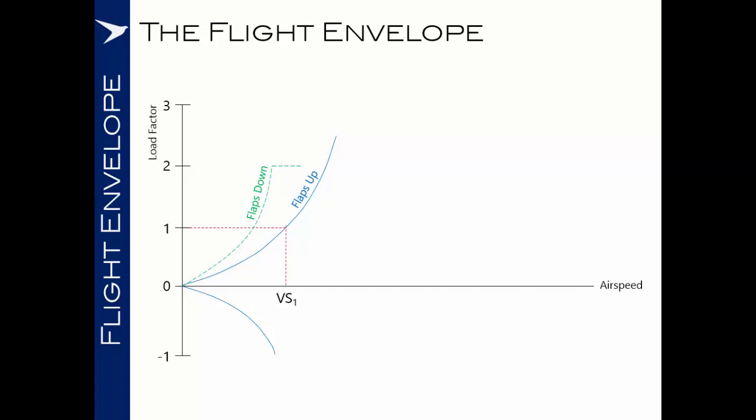With the aircraft in the clean configuration back to the blue lines, the maximum permitted load factor of the aircraft will dictate the top and the bottom of this graph. In this case, according to normal certification standards, we have a maximum positive load factor of 2.5 and a maximum negative load factor of minus one.